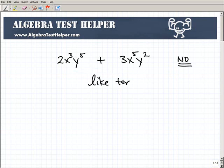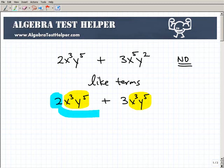For example, what if I had 2x³y⁵ and 3x³y⁵? You have to key in on the variable and power part—they have to be exactly the same. If they are exactly the same, then I can actually combine them like like terms. In this case it would be 5x³y⁵.